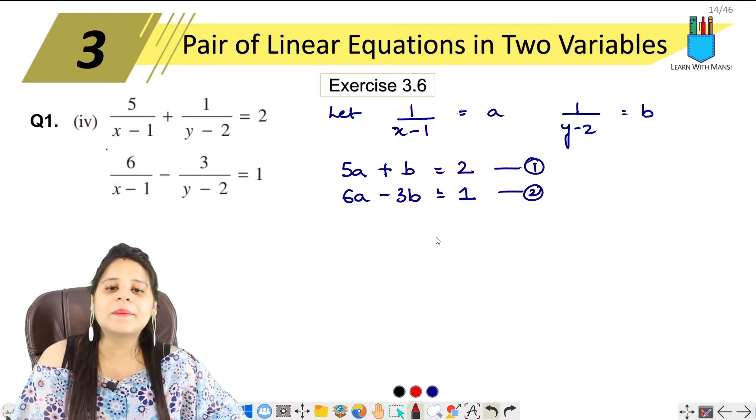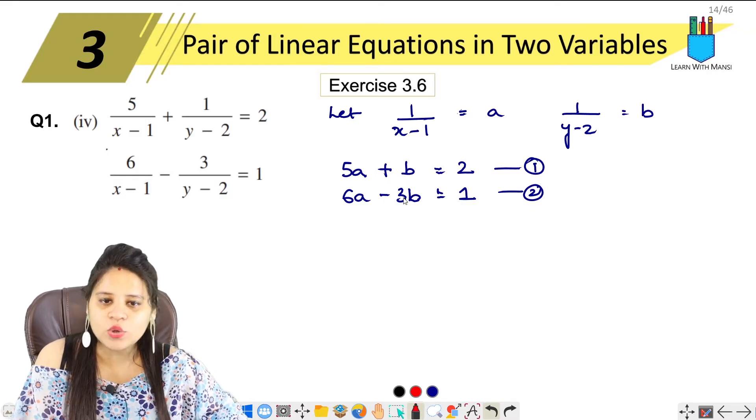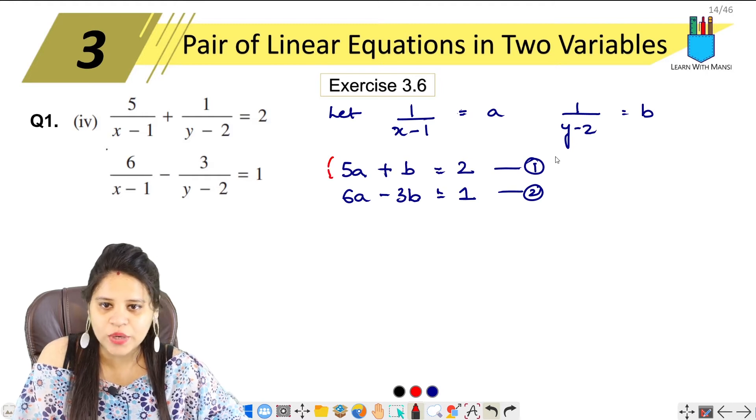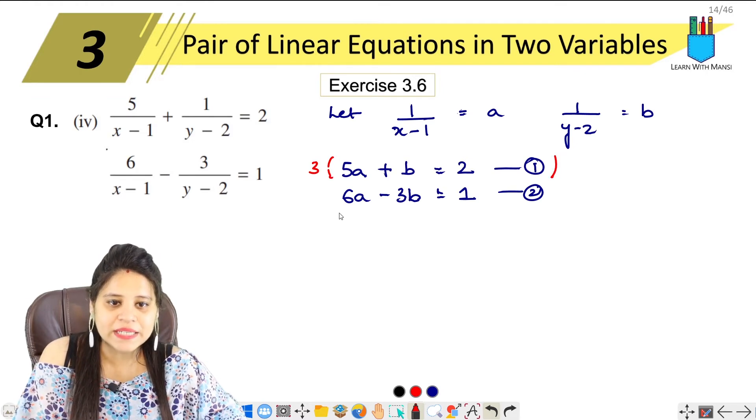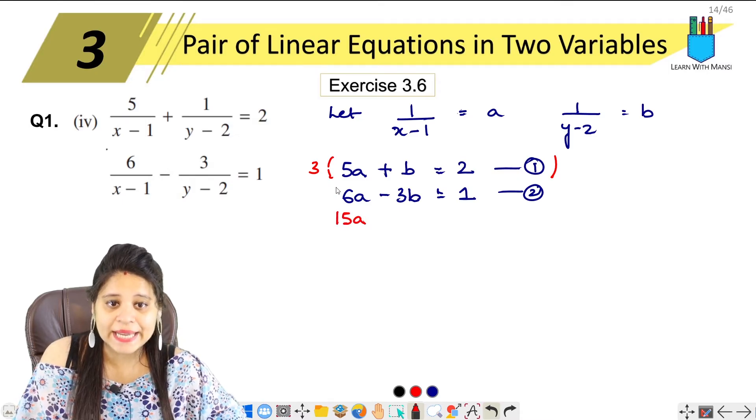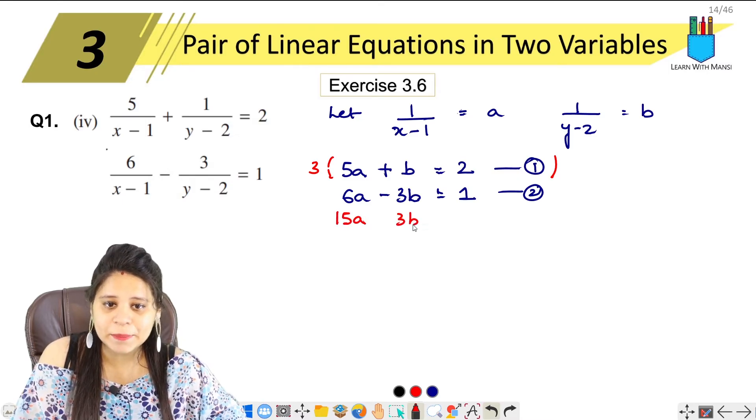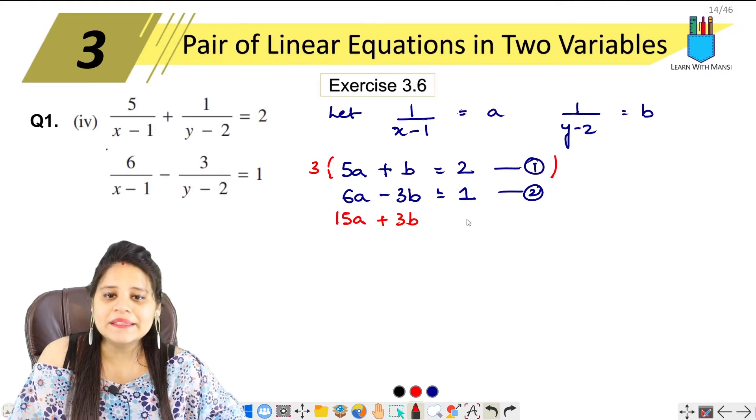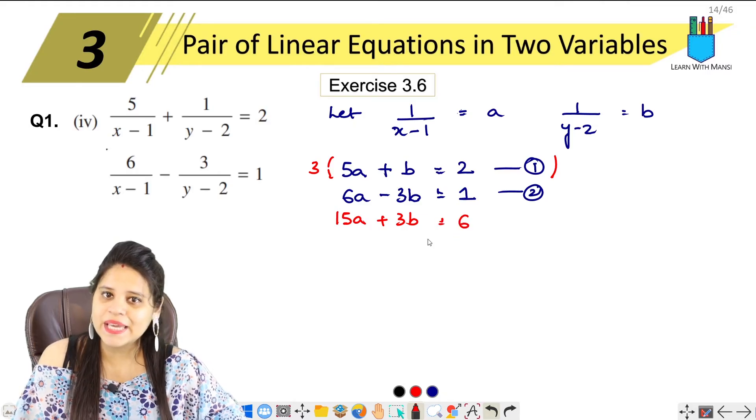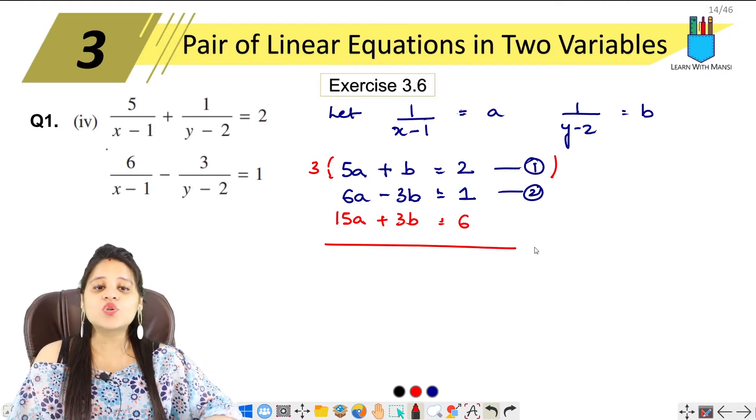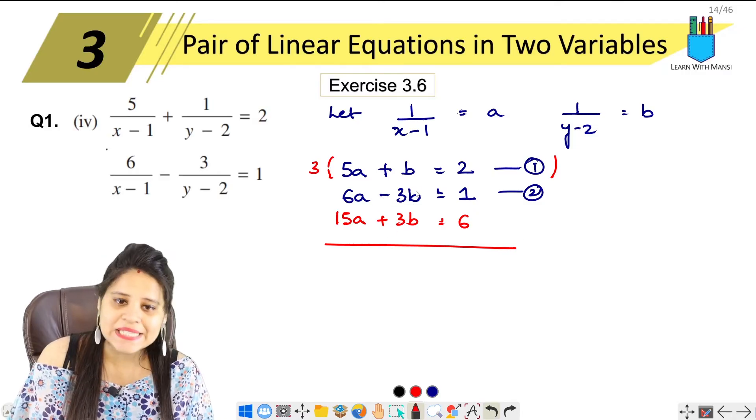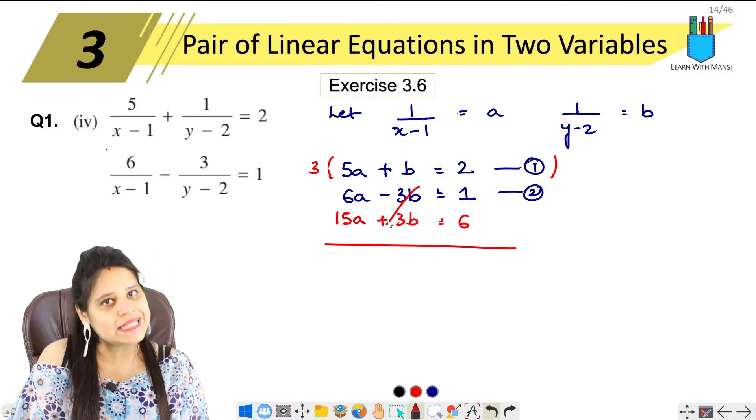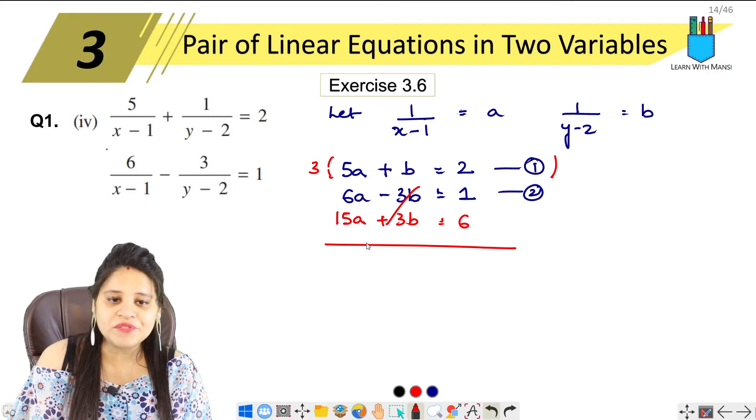And here we will solve this. We will multiply the first equation by 3. 5 into 3 is 15a, 3 into b is 3b, and 3 into 2 is 6. So this will be plus 15a.